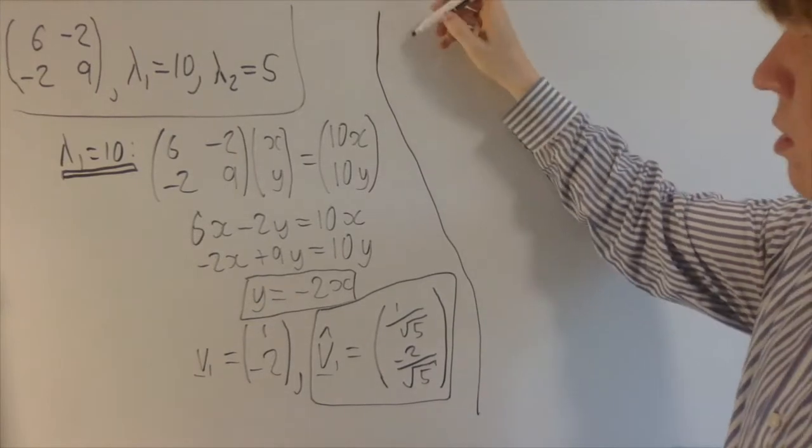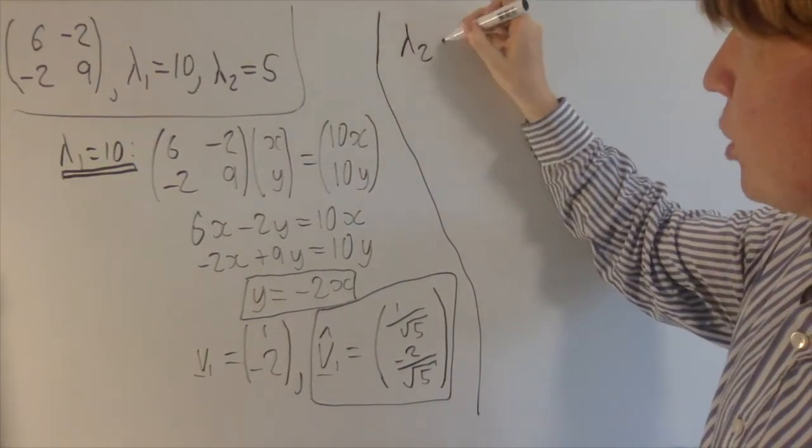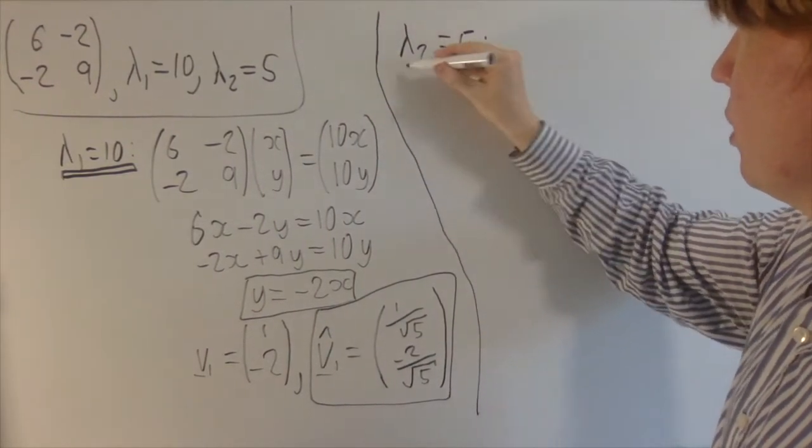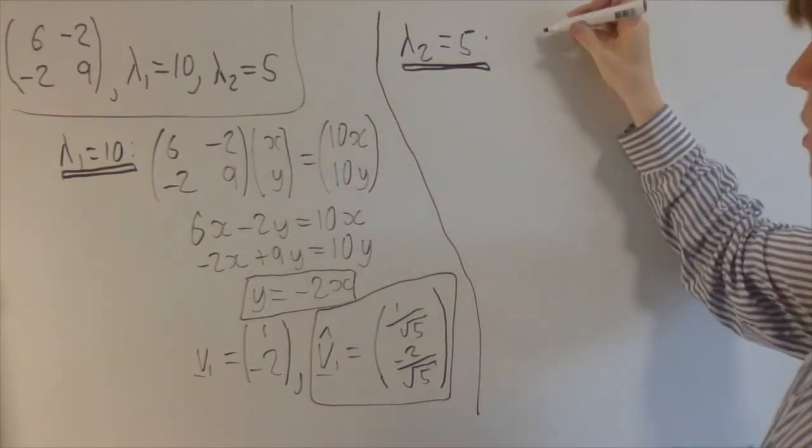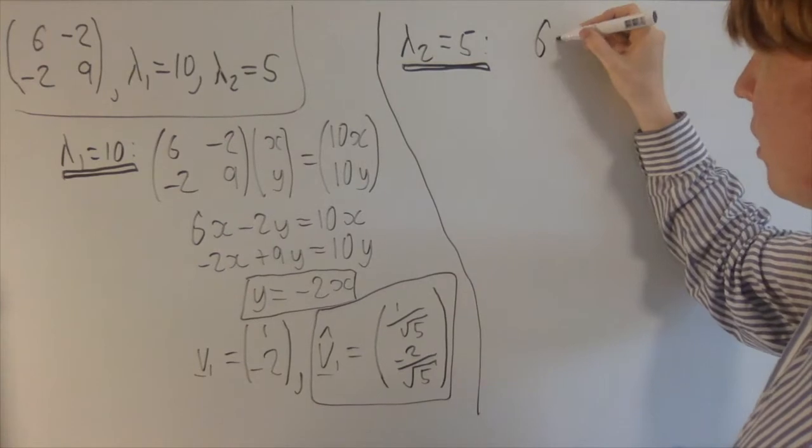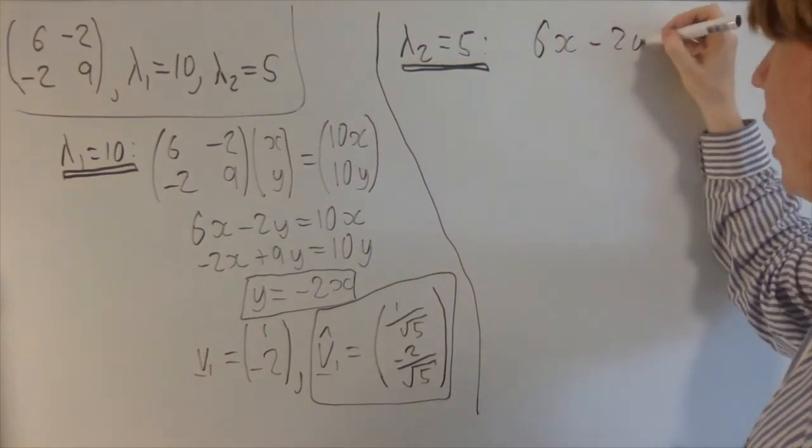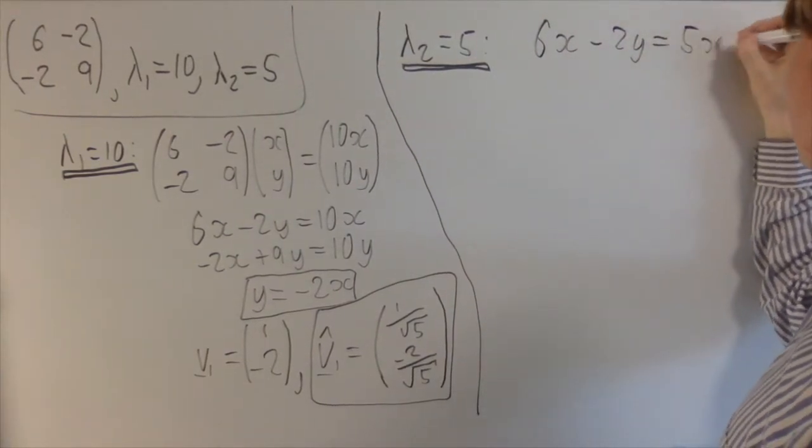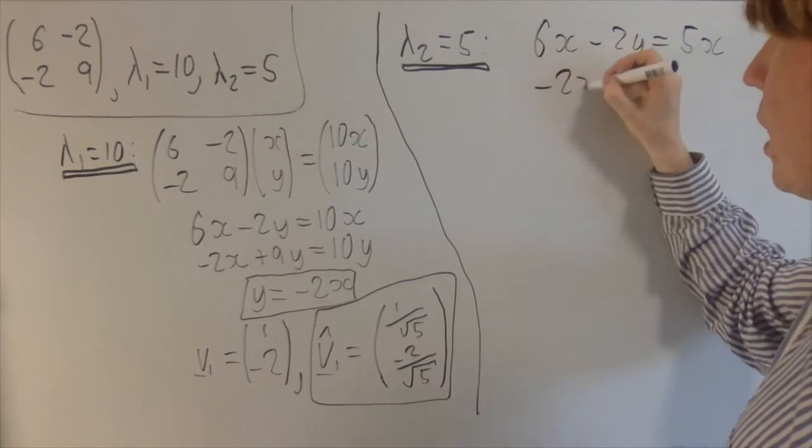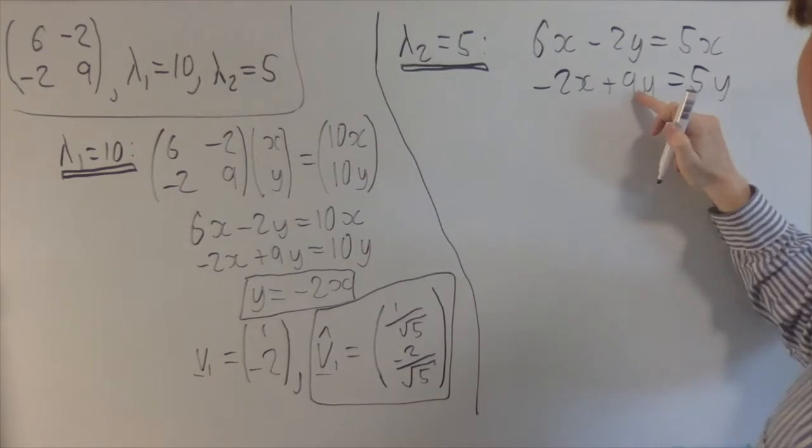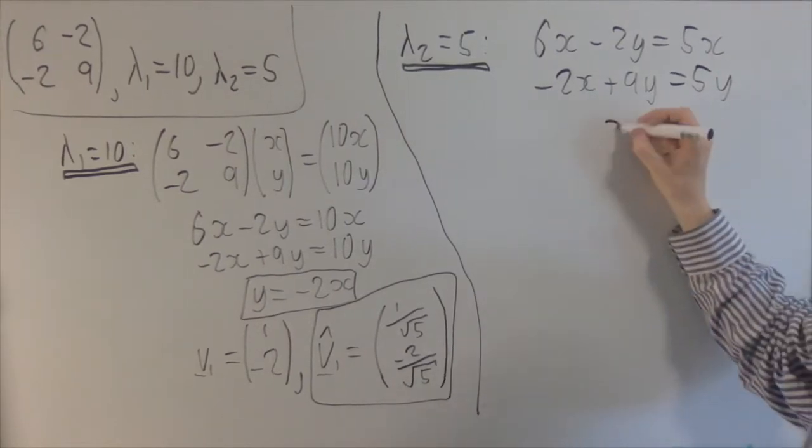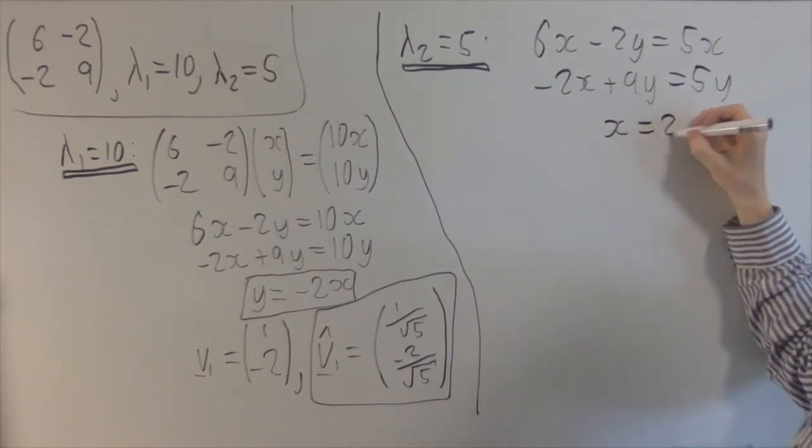So we'll take this as our unit eigenvector for the eigenvalue of 10. And then what we'll do next is the exact same thing for lambda 2, which is 5. So we've solved the same matrix equation, but you've got 5 in place of this 10. This gives you simultaneous equations: 6x minus 2y equals 5x, and minus 2x plus 9y equals 5y. And then when you solve these, you'll get x equals 2y.